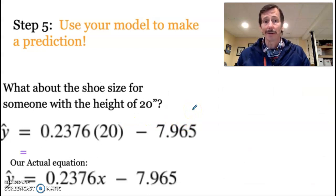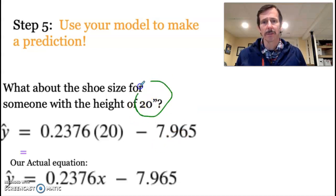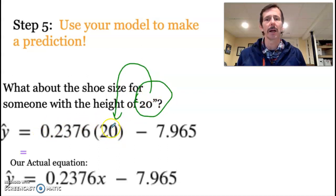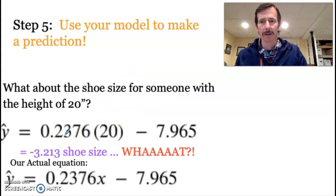All right, so now we're going to do that again. We're going to predict the shoe size for someone with a height of 20 inches, and so we would take that 20 inches. And remember, we're always making a prediction by plugging in our explanatory variable. It doesn't work the other way. It does not work the other way. That's a no-no. So we're going to put 20 in, and we're going to calculate, and what? We get a shoe size of negative 3.213.